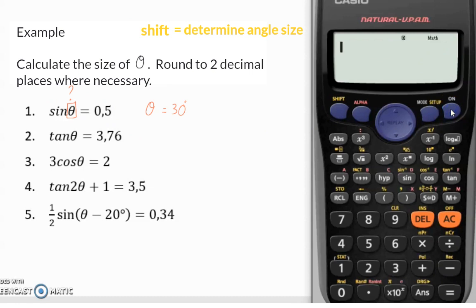In question 2, we now need to determine the angle that gives us a tan ratio of 3.76. So we start with shift again and now tan. And we need to use the ratio of 3.76. When I close the bracket and press equal, we have our angle of 75.11.